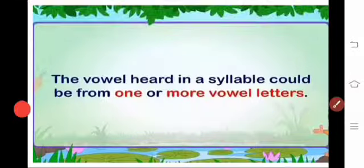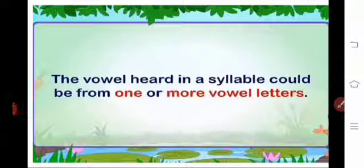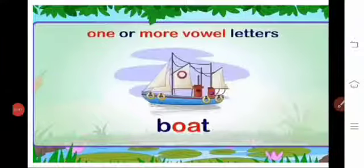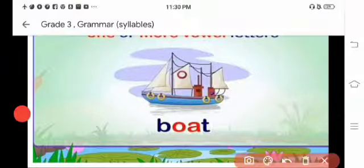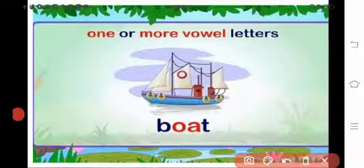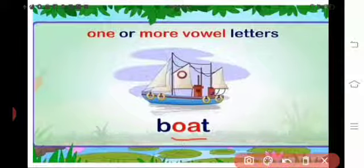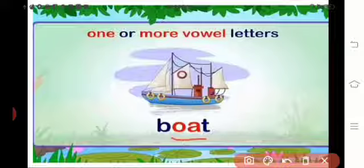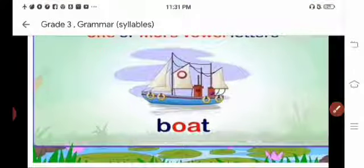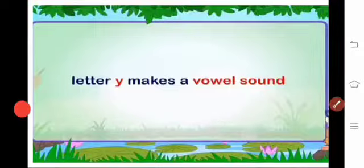The vowel heard in a syllable could be from one or more vowel letters. You can see the word 'boat': B-O-A-T. Here, two vowels are there — O and A — but they come together. If the vowel letters come together, the syllable is only one syllable.